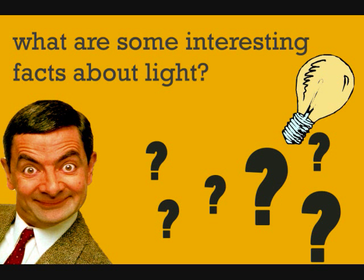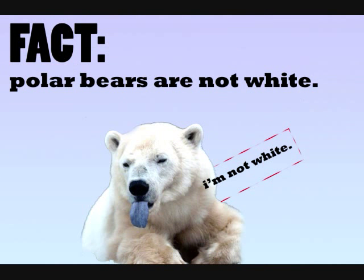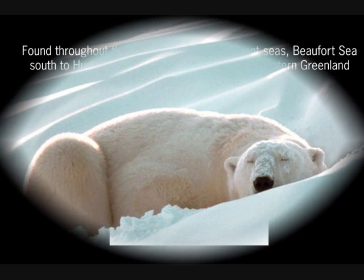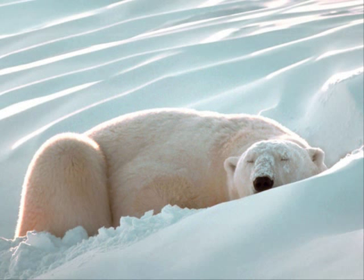Light can enable us to see, and some interesting examples of how light works on our environment are polar bears are not white. Now the polar bear is the largest carnivore that lives on land and is twice as big as the Siberian tiger.